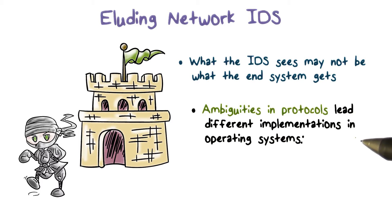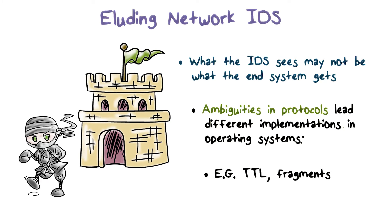As a result, if the IDS runs on Unix and the end host runs on Windows, they may not process certain packets exactly the same way. For example, options such as time to live, or error conditions associated with fragments and checksums, are handled in different ways in different operating systems.